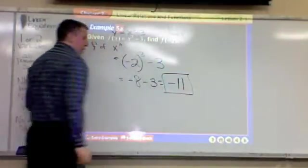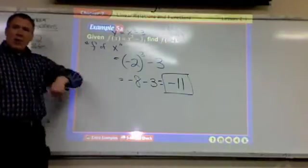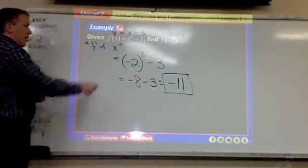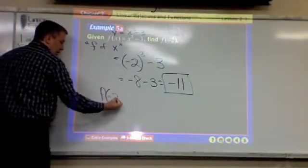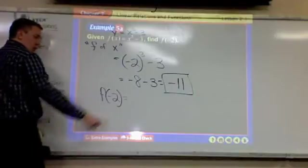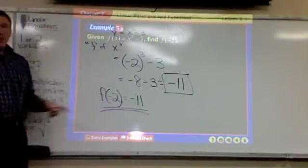I stopped there. Okay? Then you have it. Now, if I were to officially write this out, I didn't write this out, the whole thing. It says f of negative 2 equals what number? Negative 11.